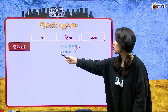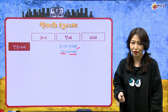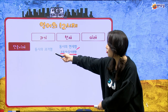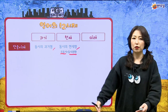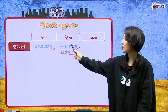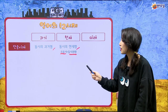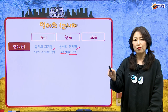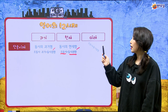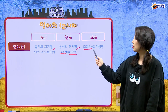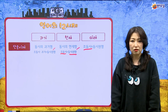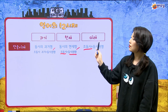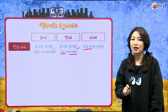현재형은 조동사와 동사 원형으로도 표현할 수 있었어요. 과거는 동사가 스스로 변해서 표현하는 동사의 과거형, 또는 조동사가 있을 경우 조동사의 과거형이 시제를 표현하고 조동사 뒤에는 반드시 동사원형이 오죠. 미래 시제는 반드시 조동사의 도움을 받아야 되는데, will 그리고 be going to 이 두 가지로 표현했어요.